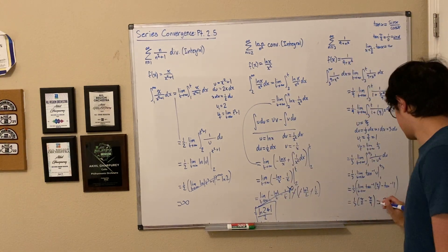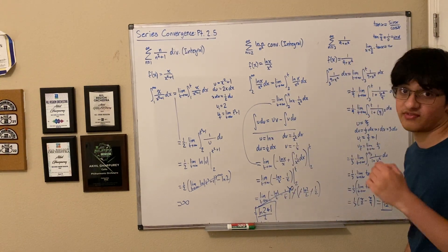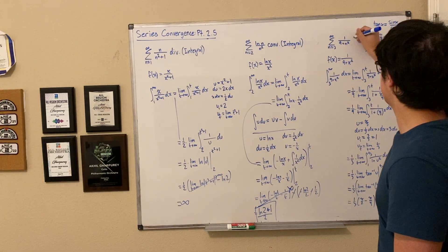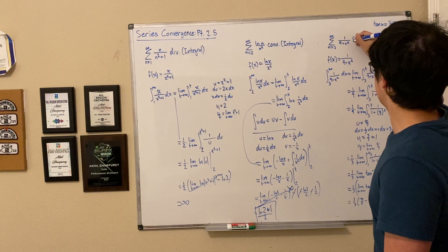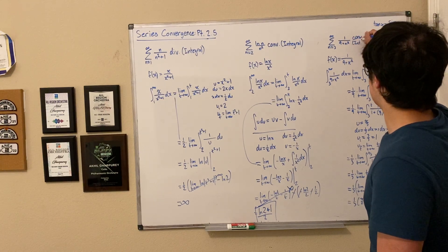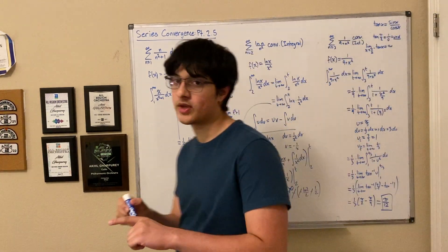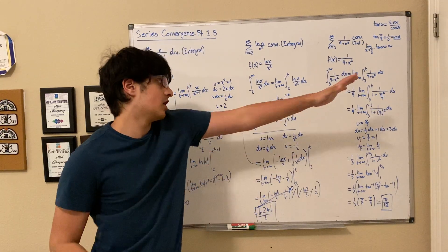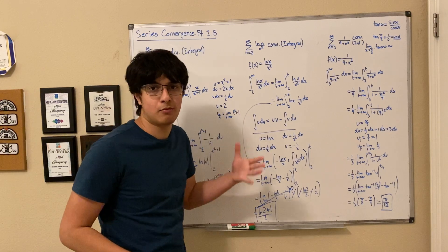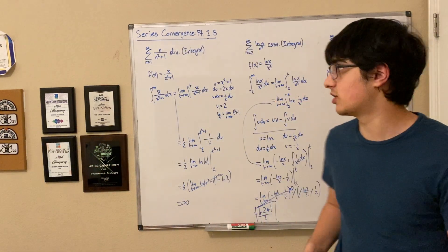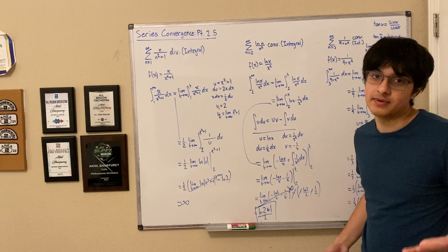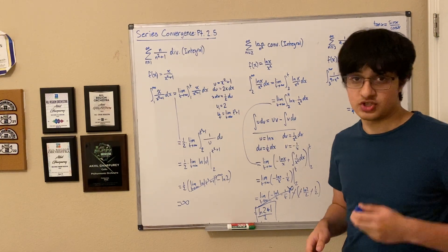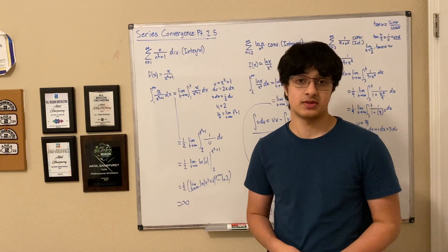π/12 is our finite value for this integral, and since it's finite, this series converges by the integral test. Hopefully you now have a clearer understanding of what goes on in the integral test. These integrals are a bit higher level, but they give a good sense of what happens when you apply the integral test. That pretty much wraps up part 2.5 — thanks for watching, and I hope to see you in future parts.